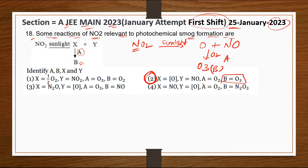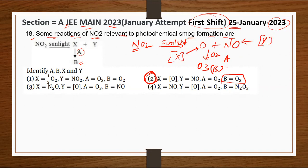So identifying the compounds: X = NO, Y = O, A = O₂, and B = O₃.